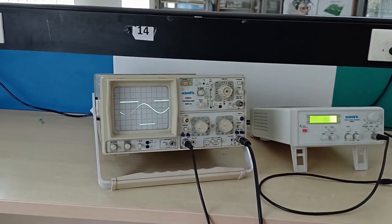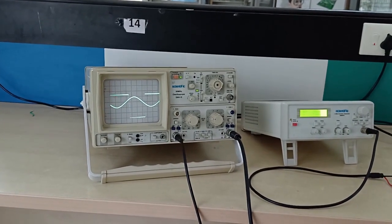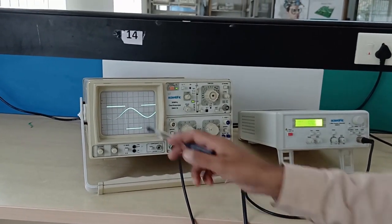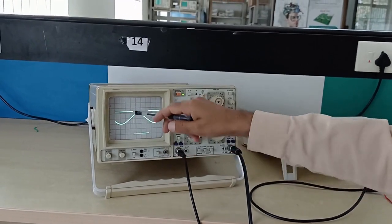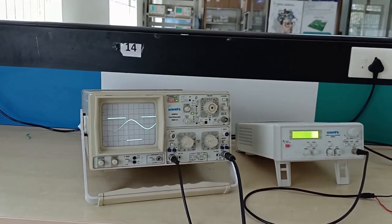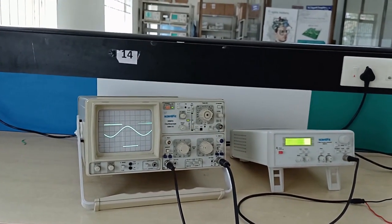For non-inverting Schmitt trigger, the inputs are changed. Input is given to the non-inverting terminal and this will be in reverse. The output square waveform will be in reverse. Thank you.